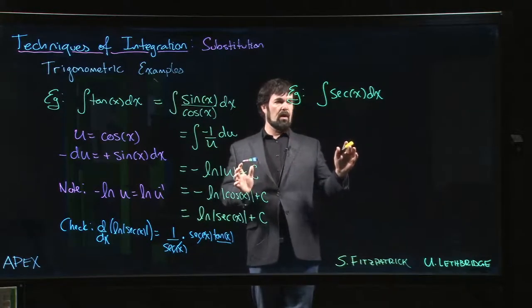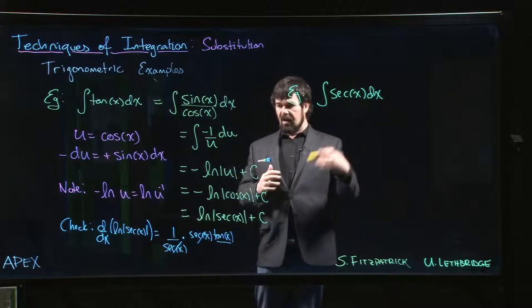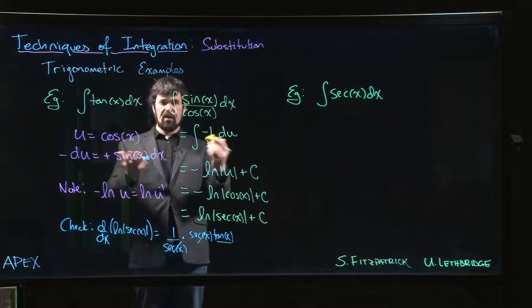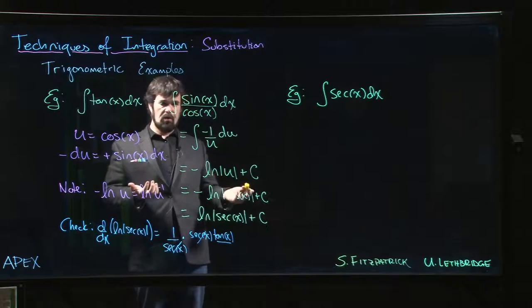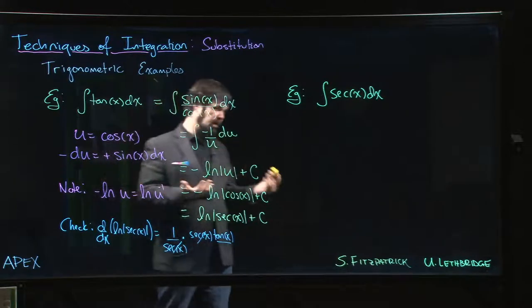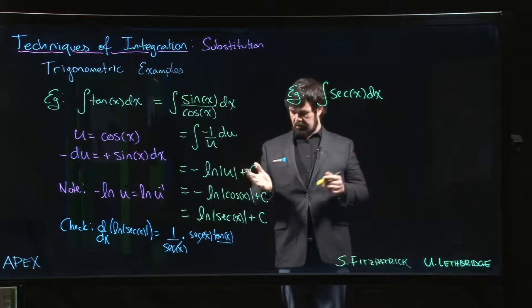So the trouble with this one is there is no obvious way to proceed. You could write secant as one over cos, but then you have cosine in the denominator. There's nothing in the numerator. So you could try to substitute cos, but when you do your du, there's no sine x in the numerator to let you do that substitution. So you can't pull off a substitution as is, which is a little bit annoying.